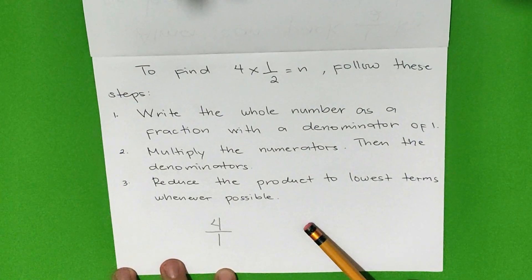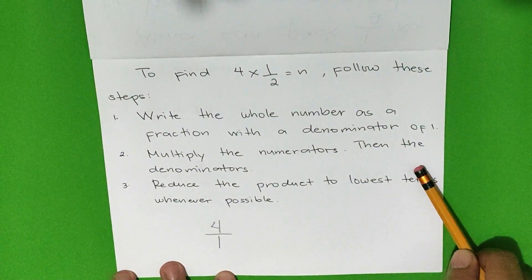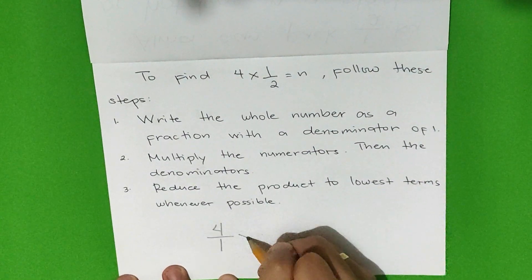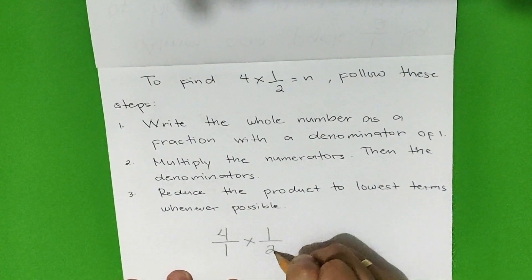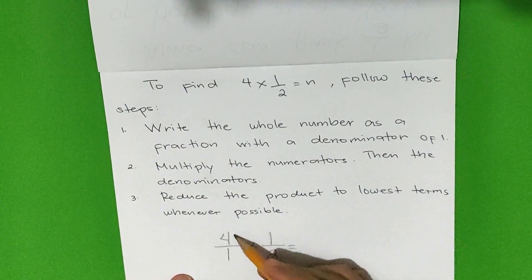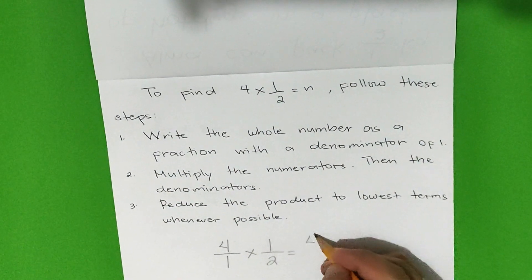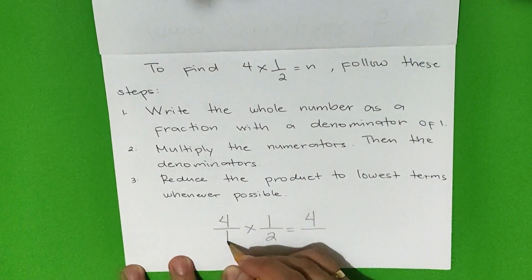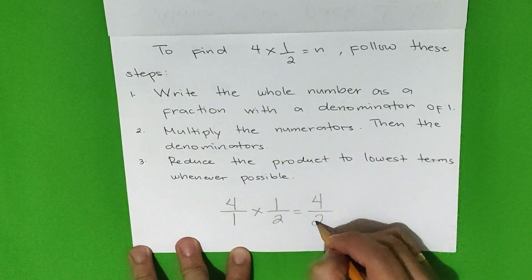Step 2: Multiply the numerators and then the denominators. Let's copy one-half. 4 times 1 is equal to 4. And 1 times 2 is equal to 2.